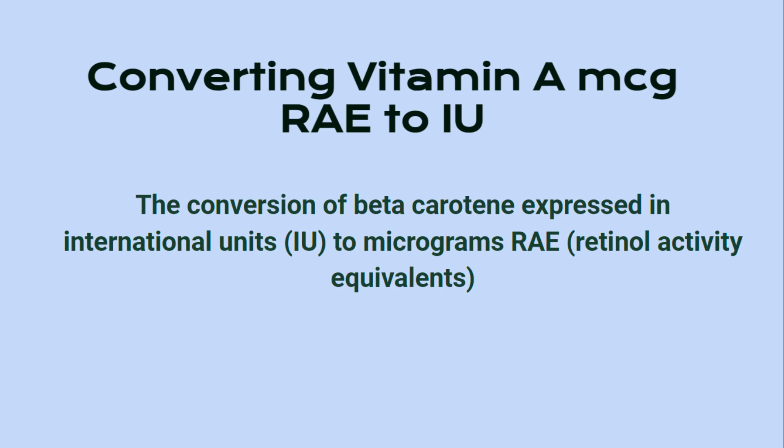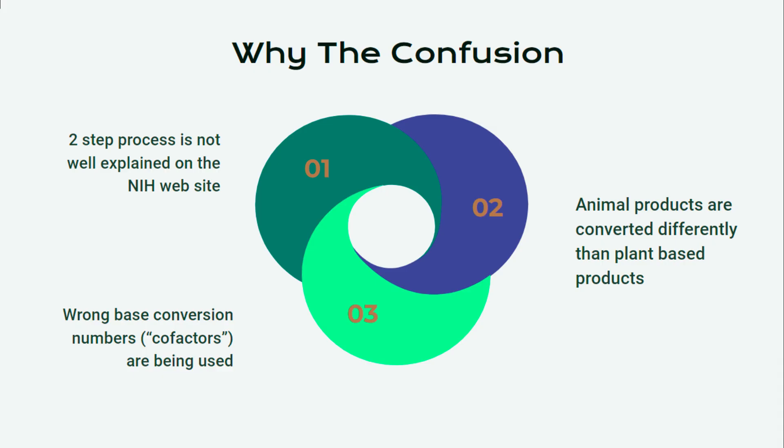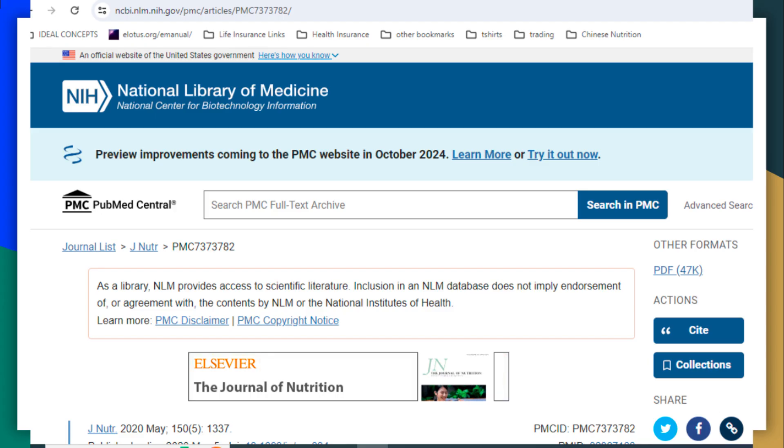Hey folks, it's Justin. Until recently, vitamin A has always been reported in international units, but new labeling regulations now require the reporting of vitamin A in micrograms of RAE. There is a lot of confusion in the nutrition community about converting beta-carotene expressed in international units to vitamin A expressed as micrograms of retinol activity equivalents. Conversion errors often occur because the two necessary steps are not being taken into account. The FDA has recently issued guidance for the industry on converting units of measurement for vitamin A, which you can read at their website.